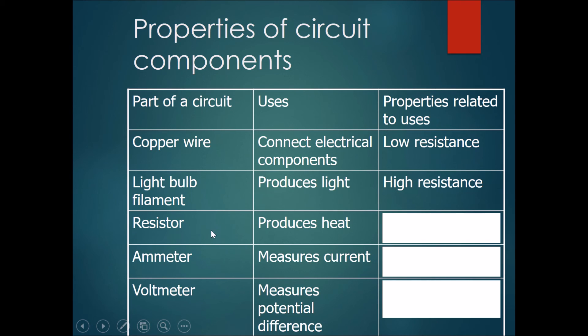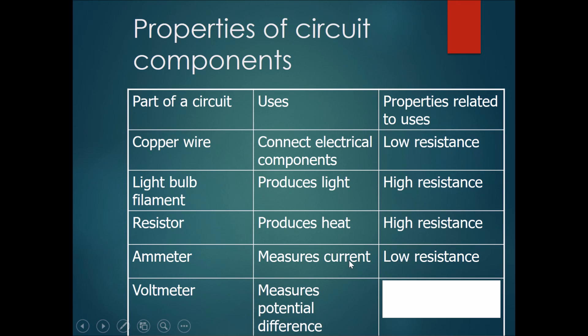Similarly, with a resistor that produces heat, it must also have high resistance. An ammeter measures current and is on the circuit itself in a series format. So the current has to go through the ammeter without being disrupted very much. So the ammeter should have as low a resistance as possible.